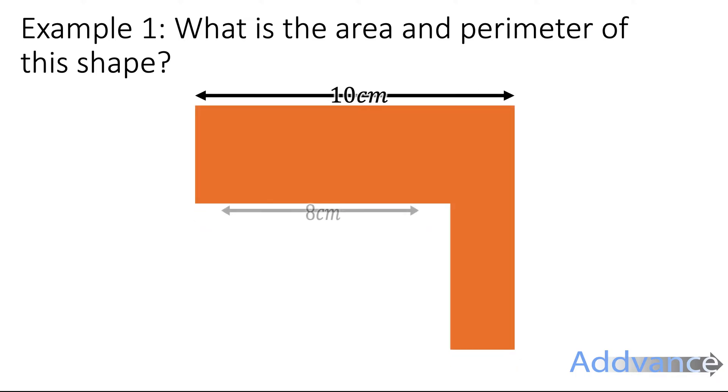So what is the area and perimeter of this shape? We're going to start by working out the perimeter, and to do that we need to add all the lengths together. There are some missing lengths, so this length down here and this length up here. What do you think these lengths are?